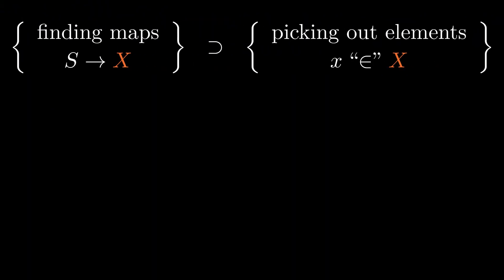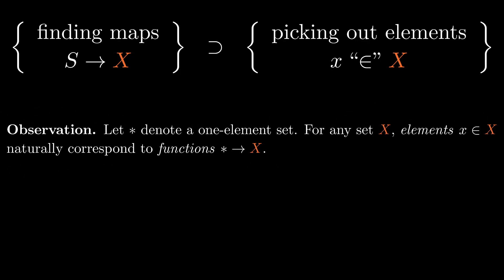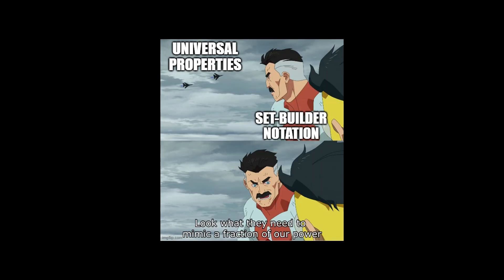If you recall from the video on limits, mapping into some object x generalizes the idea of taking elements of x. This is based on the observation that elements of a set x naturally correspond to functions from a singleton into x. This analogy motivates limits as a means of elevating element-based set theoretic constructions to other categories.